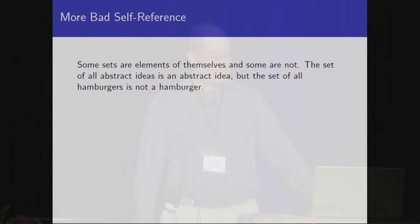So this is an example of what I'm calling bad self-reference. Another instance of bad self-reference comes from set theory. Any time you give a predicate or criterion, you should be able to talk about the set of all things that satisfy that criterion. This leaves open the possibility that a set might actually answer to its own description. For example, the set of all abstract ideas is itself an abstract idea — so that's a set that contains itself. The set of all hamburgers is not itself a hamburger, so that set is not an element of itself.